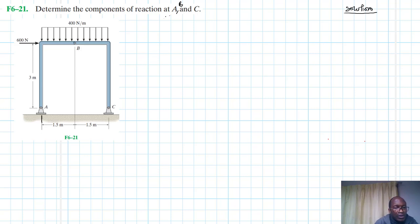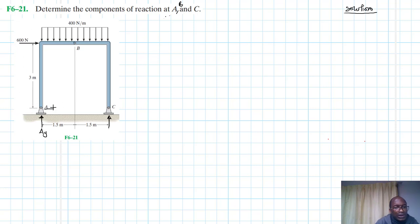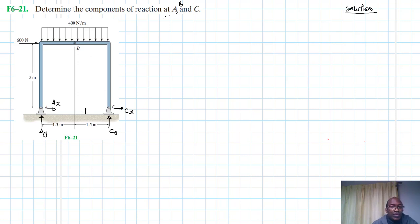Both hinges are going to have two reaction forces. We'll have Ay and Ax, and we'll also have Cy and Cx. We can find the vertical components easily. The horizontal components we'll find when we separate the two frames. We are going to find the equivalent force acting at the midspan.